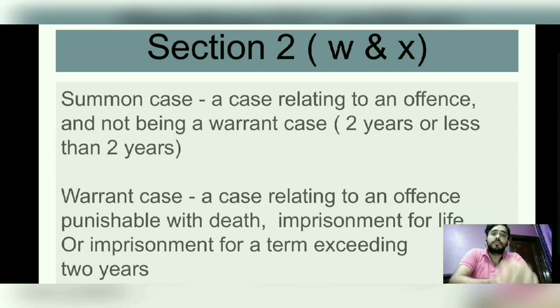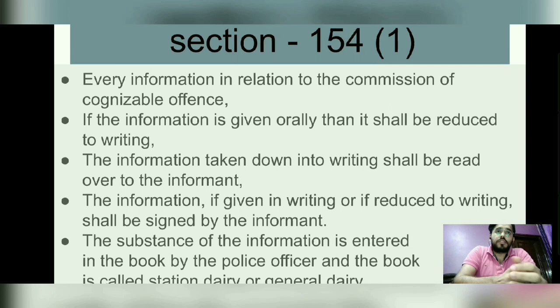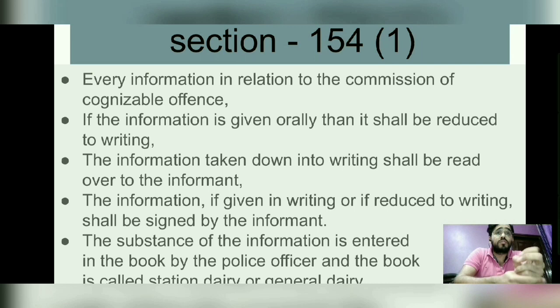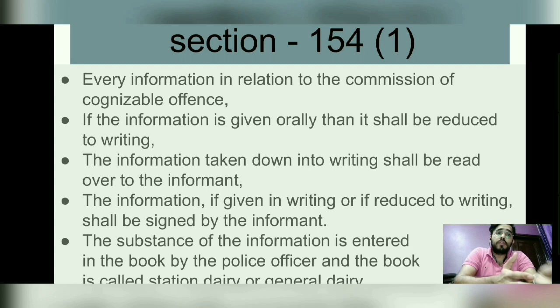Now let's start with Section 154 — FIR, First Information Report. What does the section say? Every information in relation to the commission of a cognizable offense. So there are two things here: first, every information — any information — which is related to a cognizable offense. And here, the word is 'every information,' not credible information or reasonable information — it is every information. If the information is given orally, then it shall be reduced to writing, and it shall be read over to the informant.